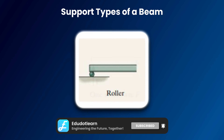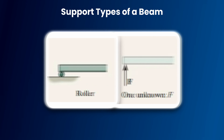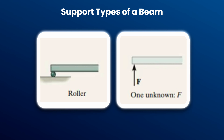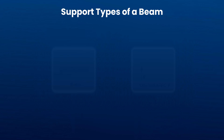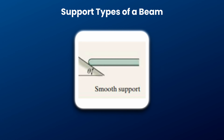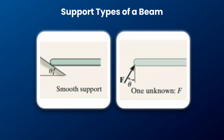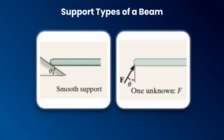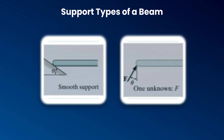The second one is the roller support. In this case, the beam cannot move along the y direction, so we mark the reaction force along the y direction. The third one is the smooth support. In this case, the beam cannot move along the direction perpendicular to the plane, so we mark the reaction force perpendicular to the plane.